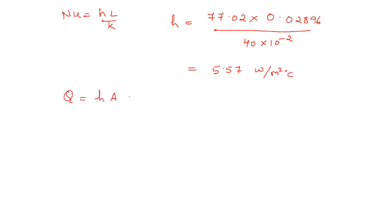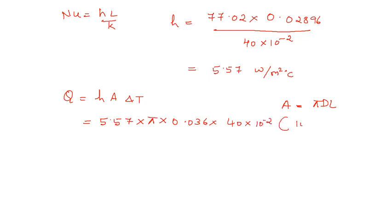Q for the vertical tube = h·A·ΔT. The area for a cylinder is π·D·L, so Q = 5.57 × π × 0.036 × 0.40 × (100 - 20). This gives the heat transfer for the vertical orientation. For the horizontal case, we need to find the Grashof number again using the diameter D as the characteristic length, then compute the Rayleigh number, Nusselt number, and h accordingly.